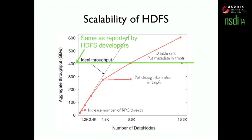We add data nodes to the system and measure throughput to see how it fits the ideal line. We find that the system quickly saturates at about 1,000 data nodes. By profiling and searching online, we find the problem is that the default number of RPC threads is too small on the name node for large-scale settings. After fixing that, the system can continue to scale to about 300 gigabytes per second.